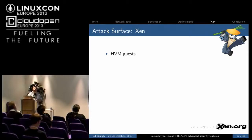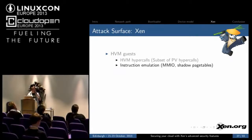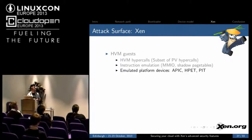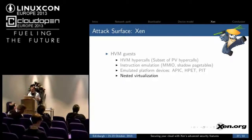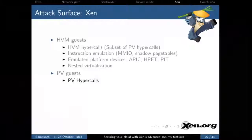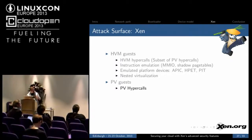Next, we're going to consider Xen as an attack surface. What interface does Xen have for HVM guests? We have the HVM hypercalls, which are a smaller subset of the PV hypercalls, plus instruction emulation — all of the MMIO handled by QEMU is emulated by Xen. If you're not running with HAP you may be running shadow page tables, which also involves emulation. Xen also emulates a number of platform devices for performance reasons: the APIC, HPIT, and the PIT. Additionally, it may have features like nested virtualization enabled, which allows things like Windows XP compatibility mode to run in Windows 7.